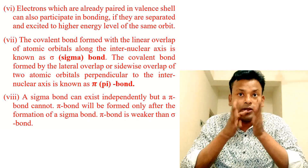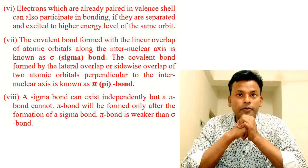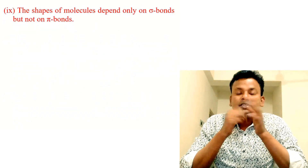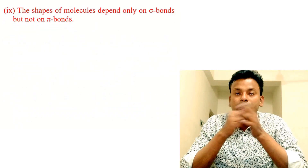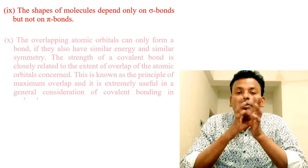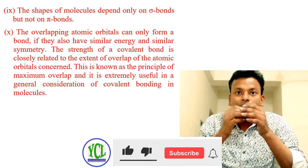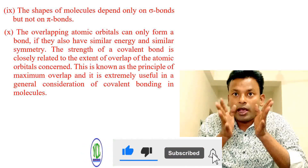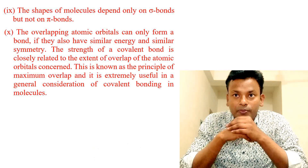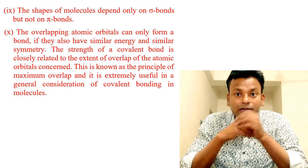Point eight: a sigma bond can exist independently, but a pi bond cannot — a pi bond will form only after the formation of a sigma bond. Pi bond is weaker than a sigma bond. Point nine: the shape of the molecule depends only on the sigma bond, but not on the pi bond. Point ten: overlapping atomic orbitals can only form a bond if they also have similar energy and similar symmetry. The strength of a covalent bond is closely related to the extent of overlap of the atomic orbitals concerned.